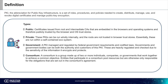For private PKI, these PKIs can be run fully internally, and the roots are not trusted in browser trust stores. Essentially, they're run with a self-contained ecosystem. The third type is government. And for the fourth one, consortium — a consortium is a group made up of two or more individuals, companies, or governments that work together to achieve a common objective. Entities that participate in a consortium pool resources, but are otherwise only responsible for the obligations set out in the consortium's agreements.